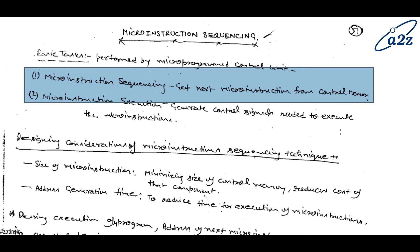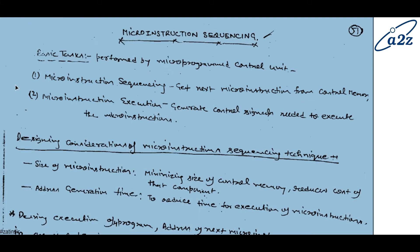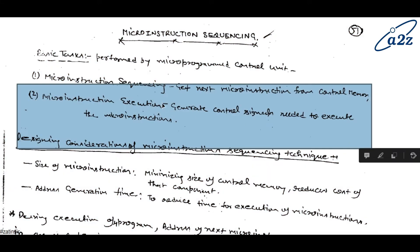Now the second part is micro instruction execution. What happens during execution? It generates the control signal. Execution means production of control signals. That control signal is needed to execute the micro instruction.